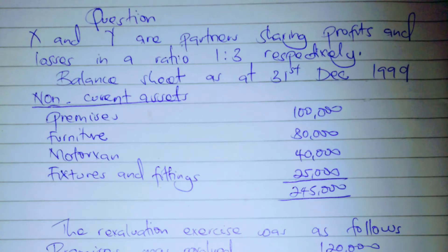Let's have a question on revaluation. X and Y are partners sharing profits and losses in a ratio of 1 to 3 respectively. The balance sheet is at 31st December 1999. Non-current assets include premises of 100k, furniture of 80k, motor van of 40k, and fixtures and fittings of 25k. Revaluation of assets occurs when a new partner is admitted, retires, or dies. So a new partner called Z was admitted and the revaluation exercise was as follows.